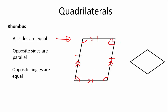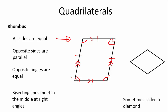You will also see that adjacent angles add up to 180 degrees. The bisecting lines meet in the middle at right angles. It is also sometimes called a diamond. The bisecting lines meet at a right angle and divide each diagonal in two — I can draw tick marks to show those segments are equal. Remember: rhombus — all sides equal, opposite angles equal.